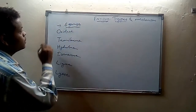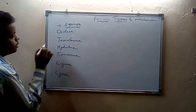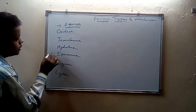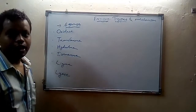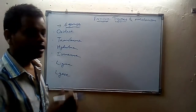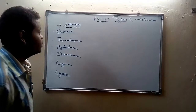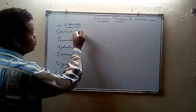The 6 groups of enzymes are: oxidase, transferase, hydrolase, isomerase, lyase, and ligase. Depending upon their function and properties, they are divided into these 6 groups.